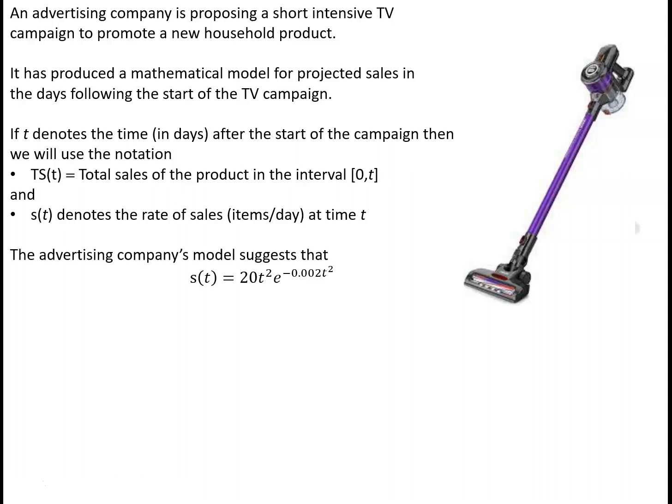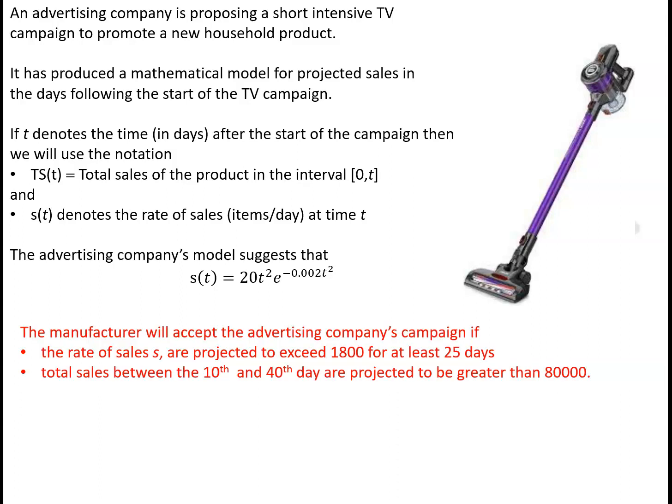The advertising company's model suggests that s(t) will be 20t² e to the minus 0.002t². The manufacturer has decided they will accept the advertising company's campaign if the rate of sales are projected to exceed 1,800 for at least 25 days, and the total sales between the 10th and the 40th day are projected to be greater than 80,000. So the big question is: will the manufacturer accept this campaign or not?